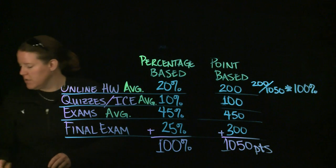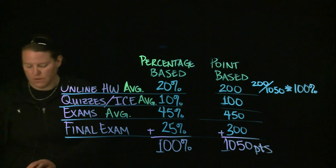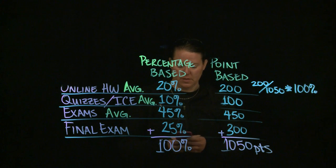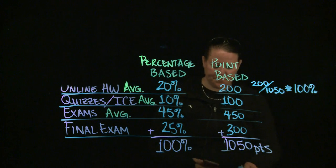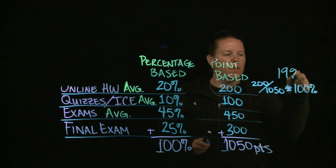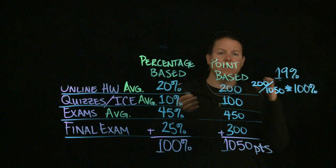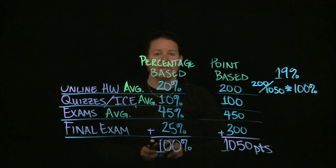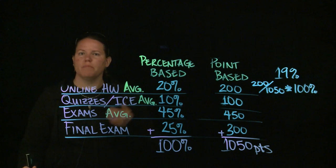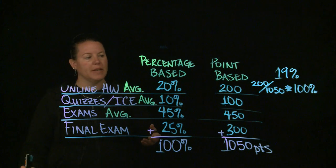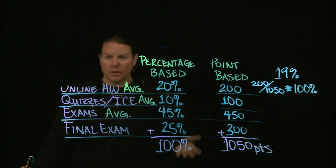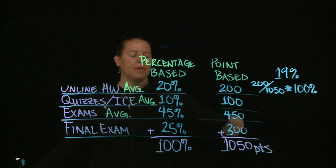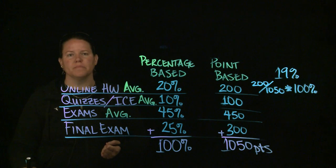If you were going to change this into a percentage-based moment so that you could calculate it the way I just calculated everything, all that you would do is you would take the points for that particular section, divide it by the total number of points, and multiply it by 100%. In this particular case, 200 out of 1050, this is worth approximately 19%. Like the 20%, instead of multiplying by .20, you would be multiplying by .19. And you could do that for all of these and figure out what the percentages are, and then calculate it based off of our percentage score.